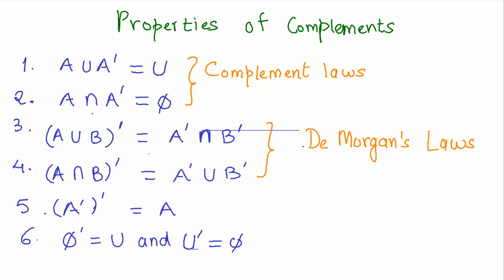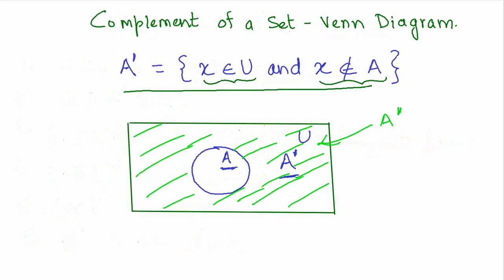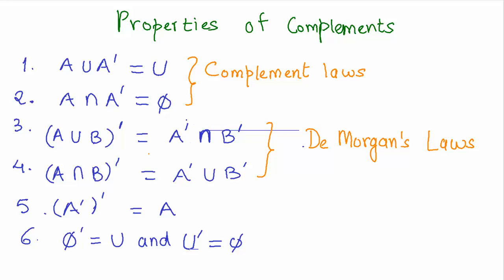Now, A intersection A complement is phi — an empty set. Think about it: what is common between A and everything else except A? It's nothing, and therefore A intersection A complement is phi.